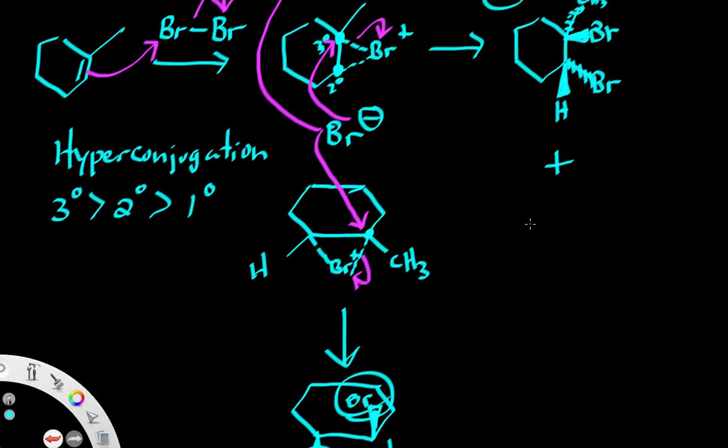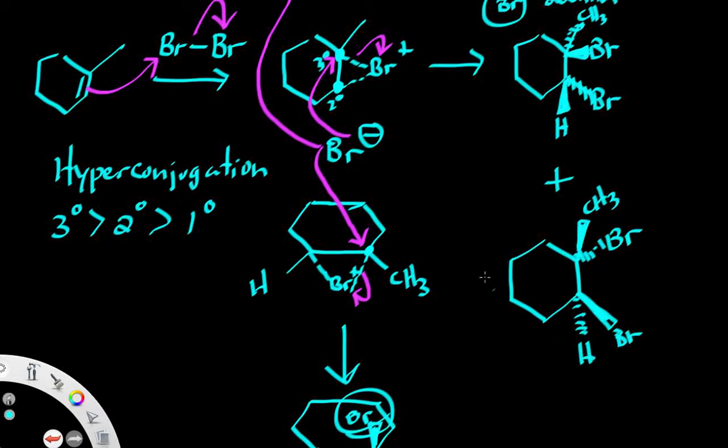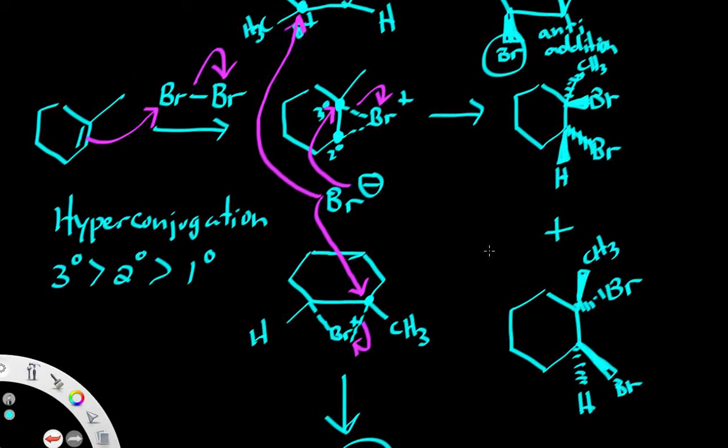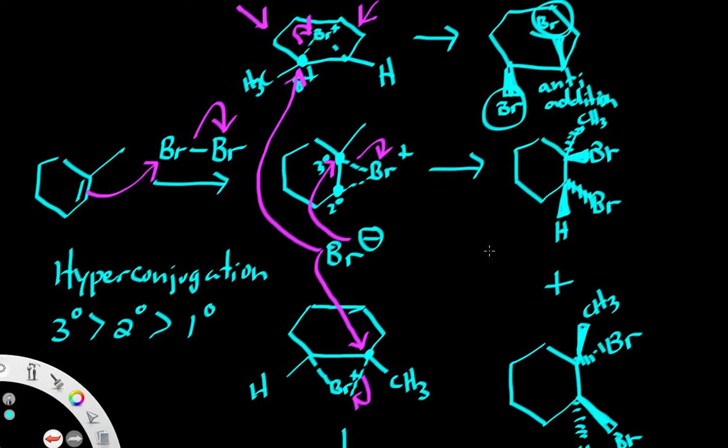And show the opposite configuration to what I drew before. So before my first bromine was wedged so now I can just make it dashed. Methyl was dashed so now I can make that wedged. And bromine was dashed so I make that wedged. Hydrogen was wedged now I just make it dashed. And so those are the enantiomers to this bromination reaction, and that is how bromination reactions work.